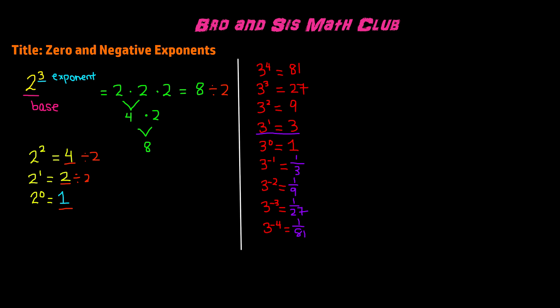There's a clear pattern here: 3 to the power of 4 is 81, and 3 to the power of negative 4 is 1/81. 3³ is 27 and 3⁻³ is 1/27. 3² is 9 and 3⁻² is 1/9. 3¹ is 3 and 3⁻¹ is 1/3. Remember that 0 is neither positive nor negative, so 3 to the power of 0 is always 1 — just like any other number to the power of 0.